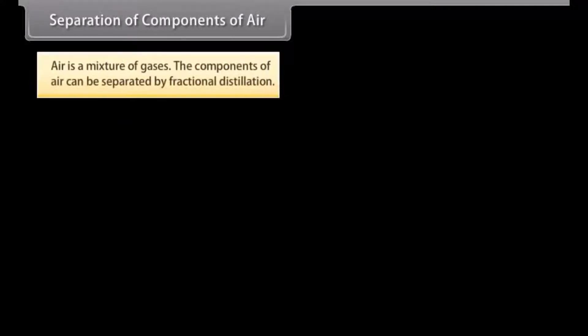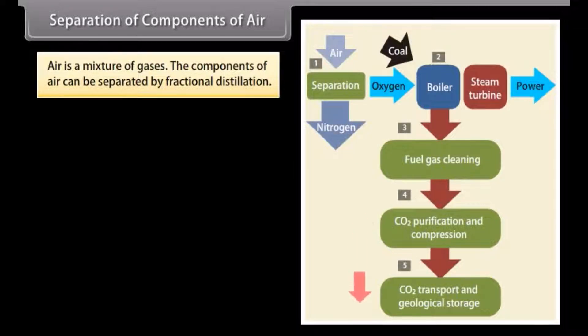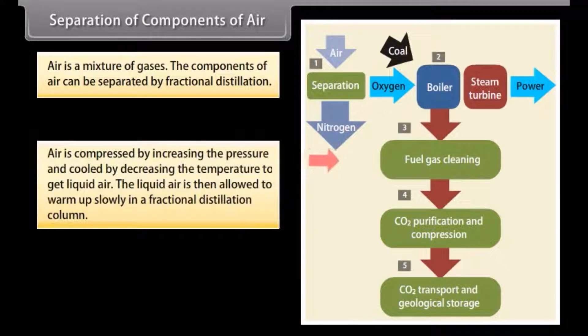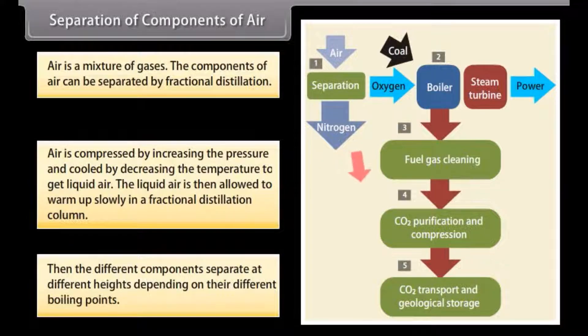Separation of components of air. Air is a mixture of gases. The components of air can be separated by fractional distillation. Air is compressed by increasing the pressure and cooled by decreasing the temperature to get liquid air. The liquid air is then allowed to warm up slowly in a fractional distillation column. Then, the different components separate at different heights, depending on their different boiling points.